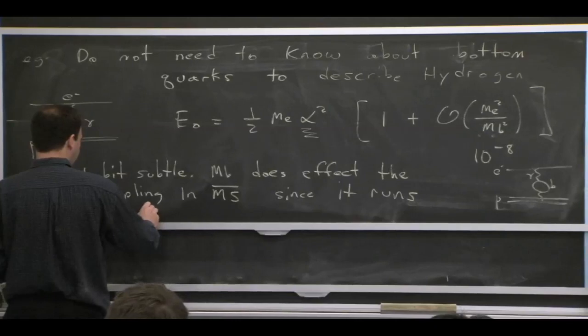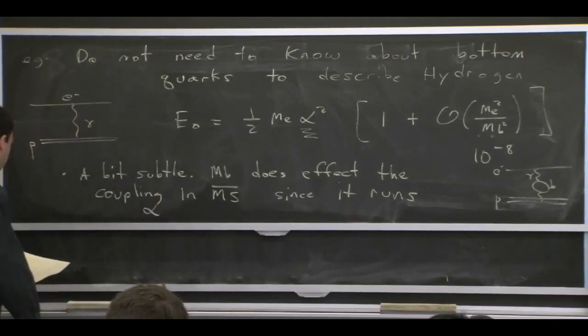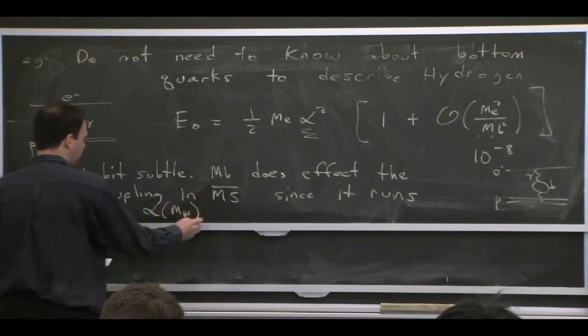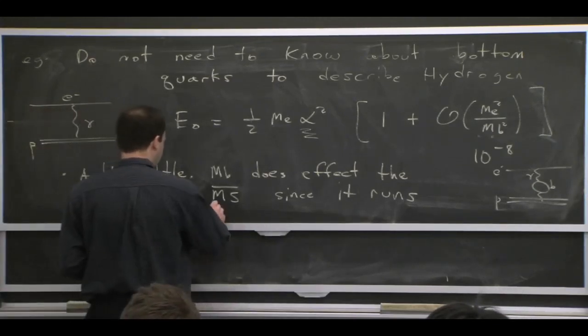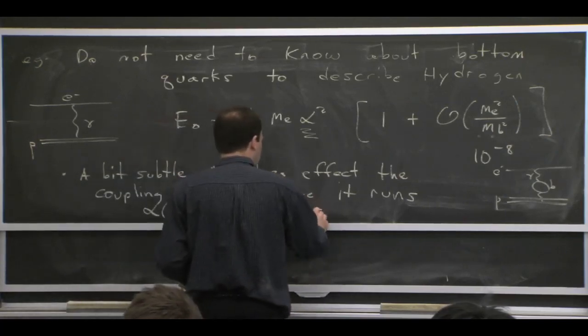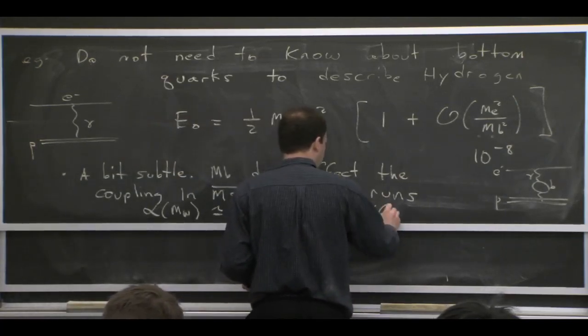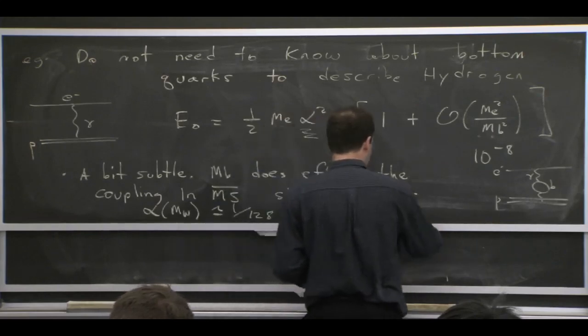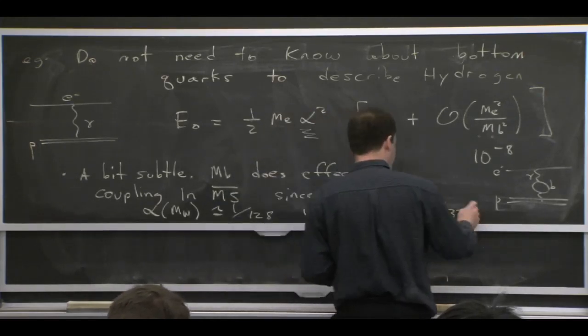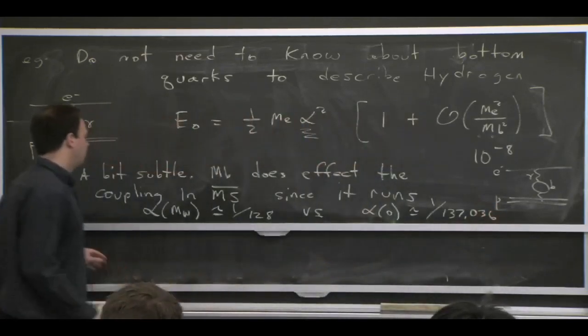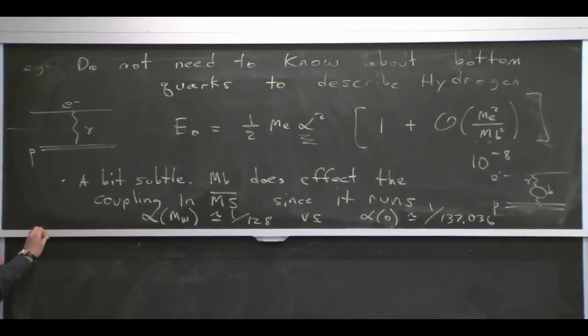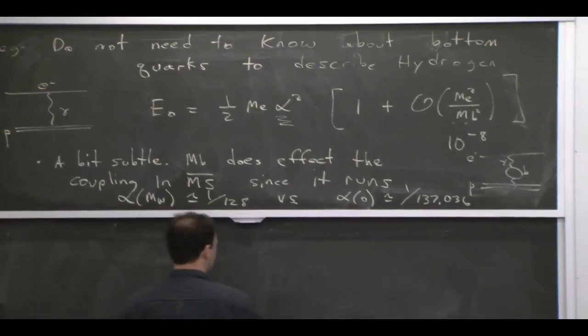In particular, for the electromagnetic coupling, it has a different value because it runs. If you evaluate it at a scale like the W mass, then it's like 1 over 128. Versus if you evaluate it at a very low energy, the electron mass or below, it's the classic 1 over 137.036. There's some change, and the bottom quark is part of what contributes to that change.